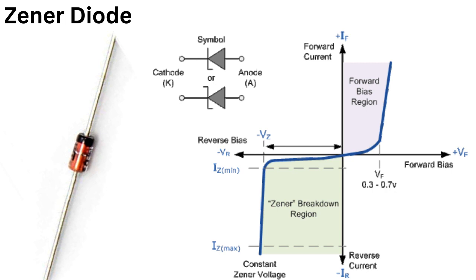When a Zener diode is connected in reverse bias, it operates in the Zener region, and the current flowing through it becomes relatively constant, regardless of the voltage applied across it. This is the region where the Zener diode is designed to operate and where it shows its unique characteristics.